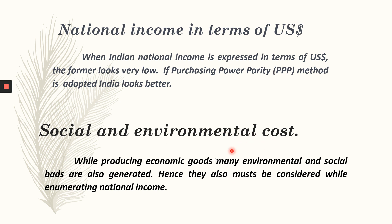Next, we have social and environmental cost. While producing economic goods, many environmental and social bads are also generated. Hence, they also must be considered while enumerating national income. For example, we have lots of factories. When we use factories for the production process, pollutants are released which are very hazardous and create great damage for the environment and for people living around the factories. So while calculating national income, these environmental and social bads have to be subtracted from the national income.